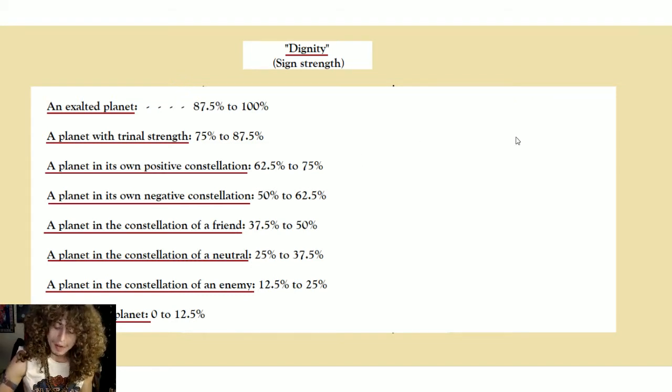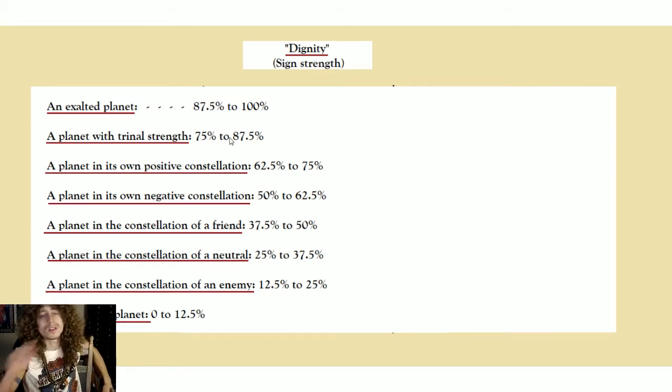Planets display the following relative amounts of their potential strengths. An exalted planet yields 87.5 to 100% of its strength, and that's just pure strength, not necessarily beneficence. A planet with trinal strength, or mula tricona strength, is the next down. Although mula tricona does also imply beneficence, goodness as well as strength.